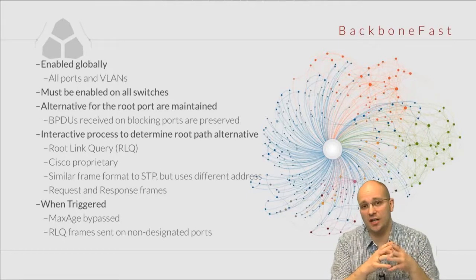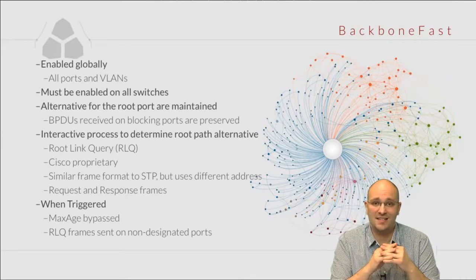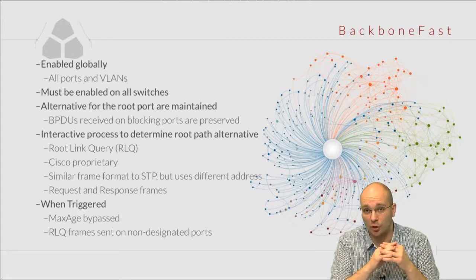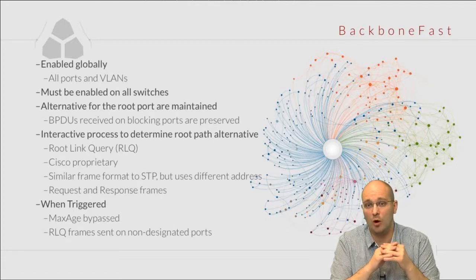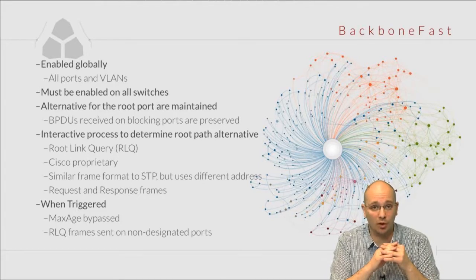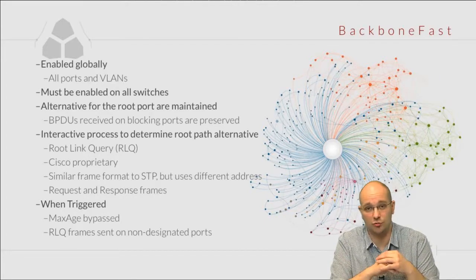What triggers Backbone Fast? What triggers it is the loss of BPDUs on the root port. Or not only that — what happens if we receive a superior BPDU on one of the ports that is blocking? If we receive a superior BPDU on the blocking port, that means we should no longer be blocking on this port if this is indeed a better path to reach the root.